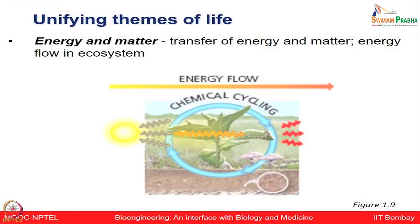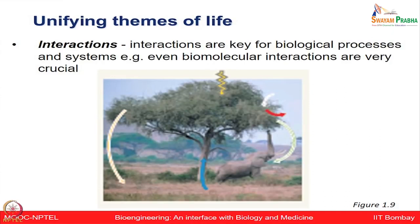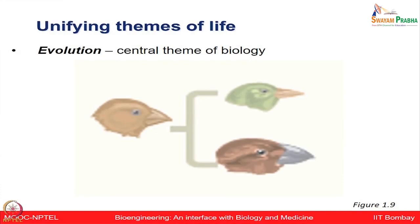The transfer of energy and matter is very crucial — how energy flows in the ecosystem is governed by intricate relations of various processes involved in chemical cycling. Interactions are key for biological processes and life forms, both at the environmental level with organisms and at the biomolecular level, where the interactions of various biomolecules are very crucial. Evolution is one of the central themes of biology — understanding biochemical properties, knowing biomolecules, and relating that to the evolutionary level provides a very interesting understanding of this central theme.